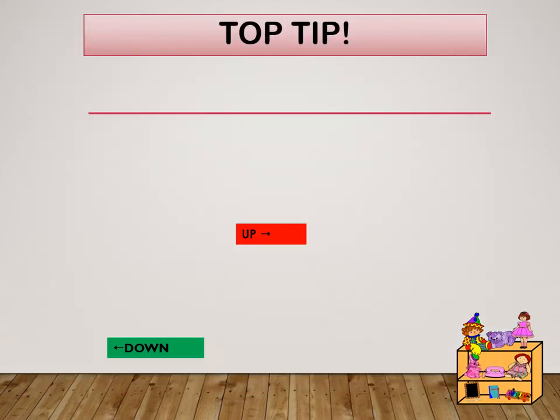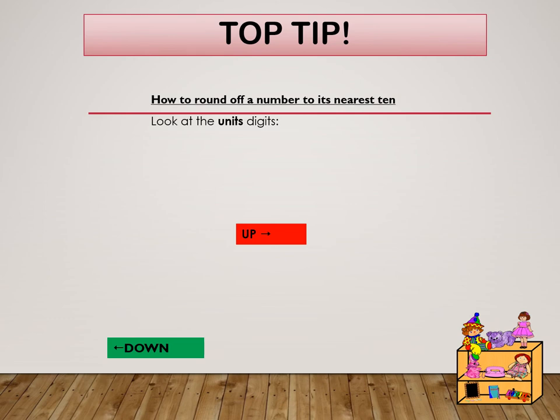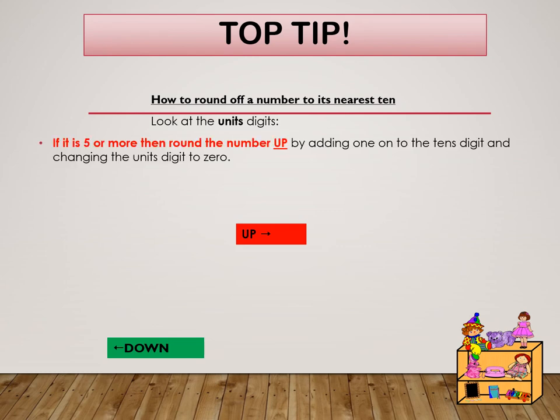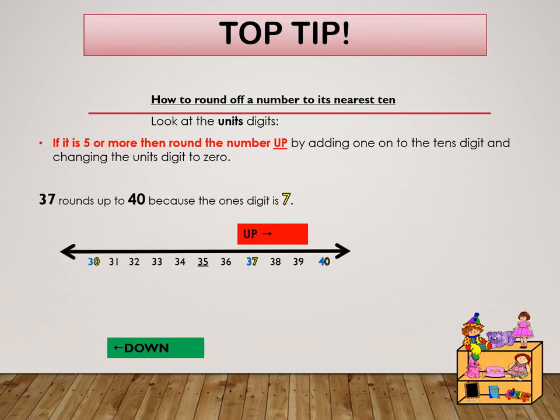Here are some tips on how to round off a number to its nearest 10. Look at the unit's digit. If it is 5 or more, then round the number up by adding 1 onto the 10's digit and changing the unit's digit to 0. For example, 37 rounds up to 40 because the unit's digit is 7.